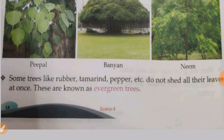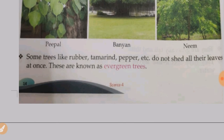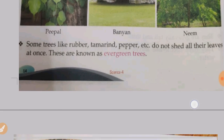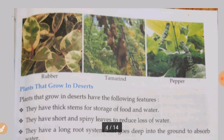Some trees like rubber, tamarind, and pepper do not shed their leaves all at once. These are known as evergreen trees — they are always green. Examples of evergreen trees are rubber, tamarind, and pepper.